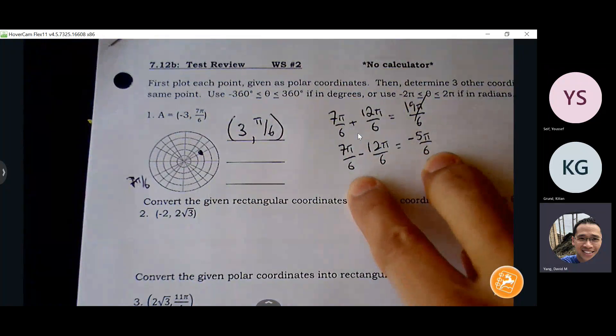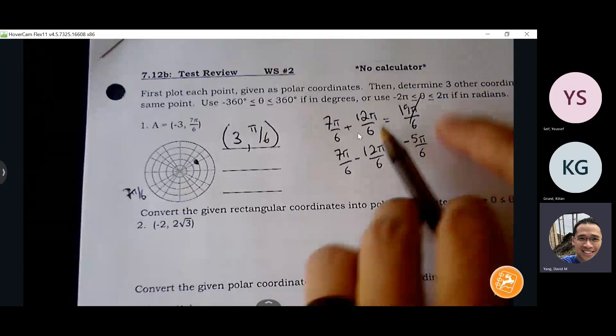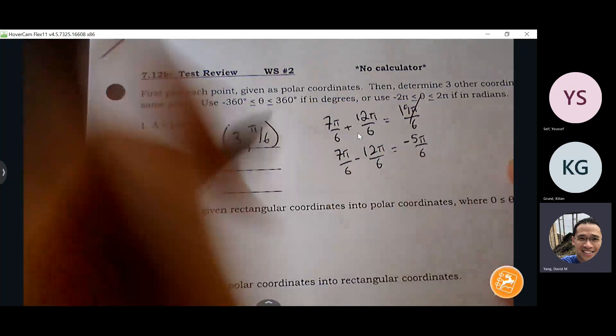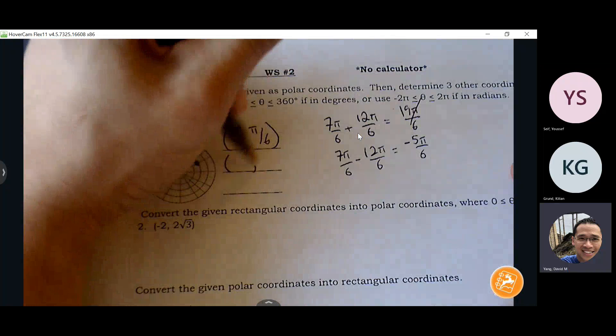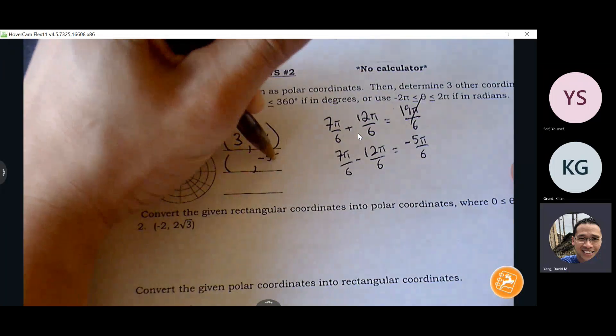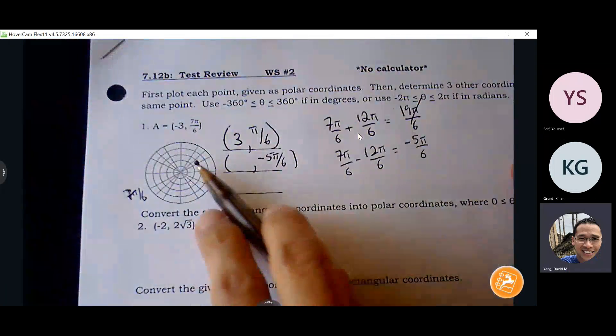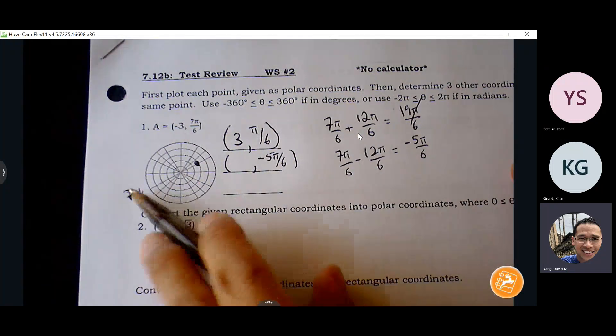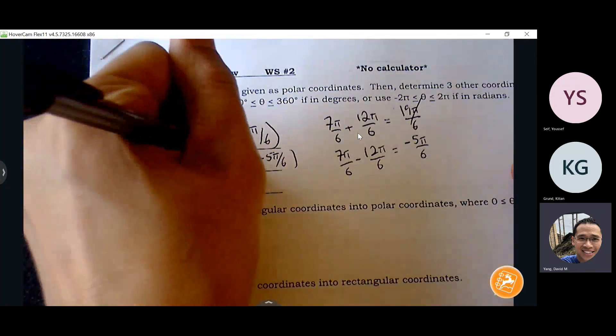And 19 pi over six is more than two pi because two pi is 12 pi over six. So we know this is too large. So seven pi over six minus 12 pi over six will give me negative five pi over six. And that is equivalent to a third quadrant, and it's between negative two pi and two pi. So now I can also say to hit the same point, I can go three units away from the third quadrant. So negative three.